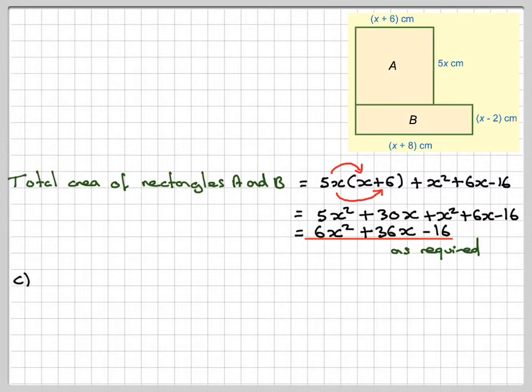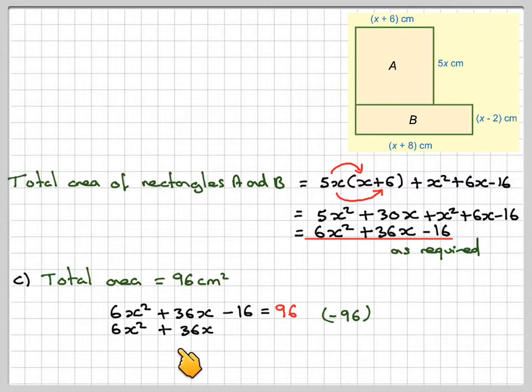Now, we're told that the total area for part C is 96 cm², and we know that this represents the total area of the shape. So therefore, 6x² + 36x - 16 equals 96. Now, this is a quadratic. To solve quadratics, you have to put them equal to 0. So we'll take 96 from both sides. So we've got 6x² + 36x - 112 = 0.